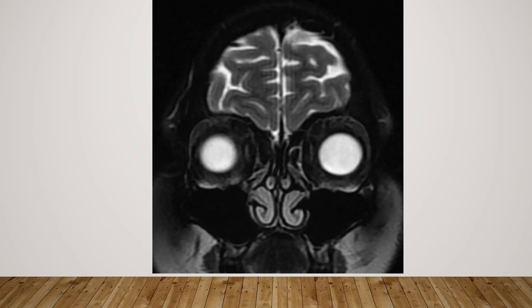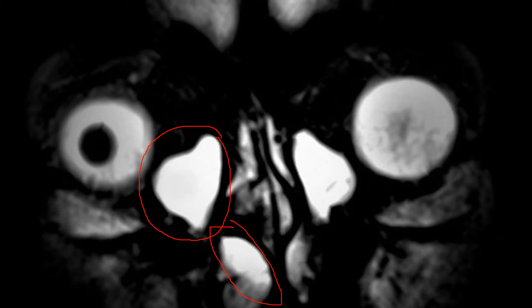To demonstrate the nasolacrimal drainage apparatus on this T2-weighted coronal image: here is the location of the lacrimal sac, which drains into the nasolacrimal duct, which further drains into the inferior meatus near the inferior nasal turbinate. Going back to our case, what we can see on the T2-weighted coronal image is the dilated lacrimal sac and the dilated nasolacrimal duct. These findings are bilaterally symmetrical. The cause of this obstruction is at the level of the valve of Hasner, causing bilaterally symmetrical dilatation of the lacrimal drainage apparatus.